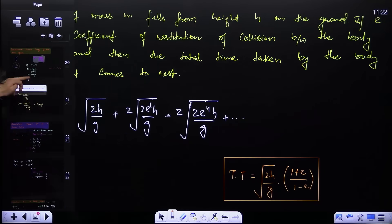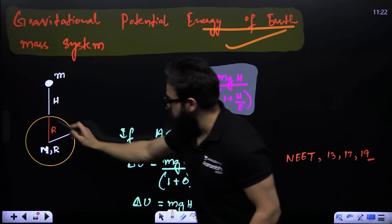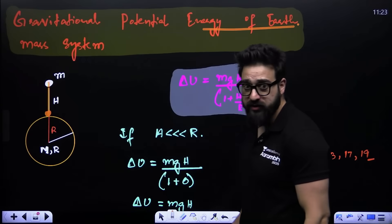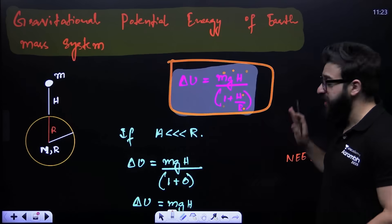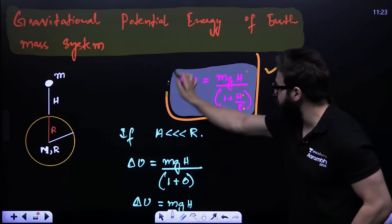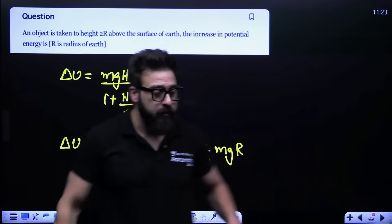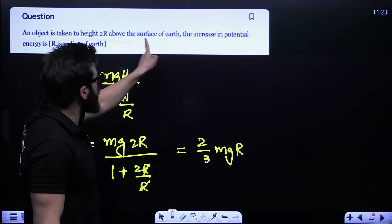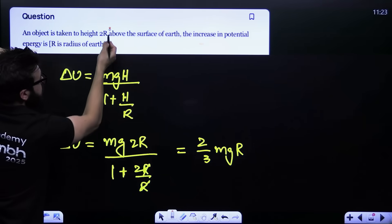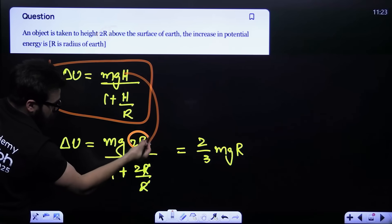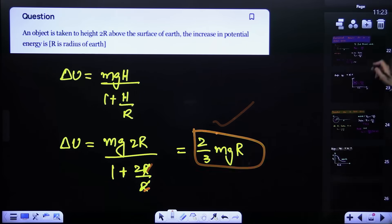Gravitational potential energy of the Earth-mass system: if an object is taken to height h from the surface of Earth, the change in potential energy is mgh/(1 + h/R). This was asked in NEET 2013, 2017, 2019 and many more times. For example, if h = 2R, substituting gives change in PE = (2/3)mgR.